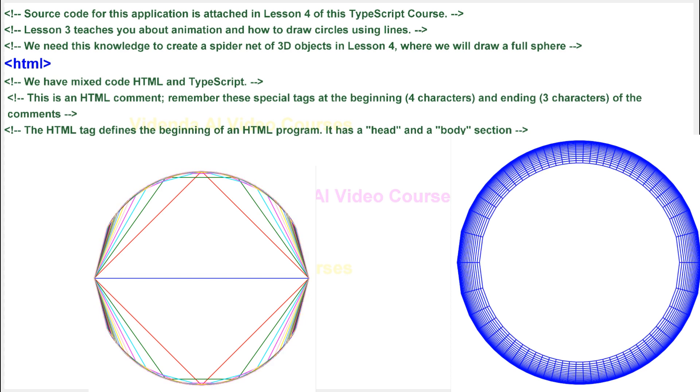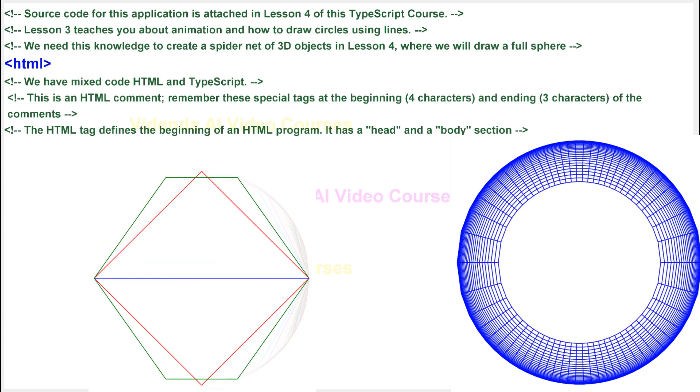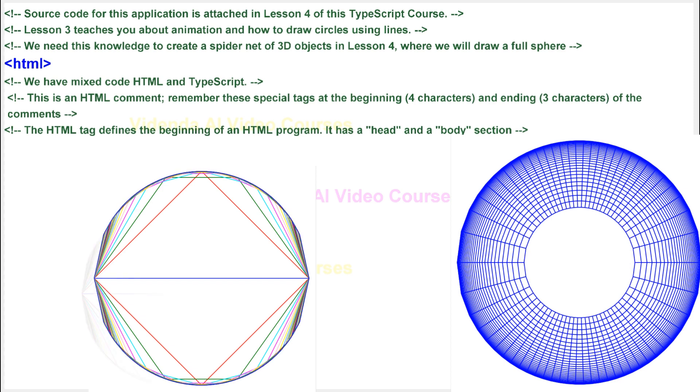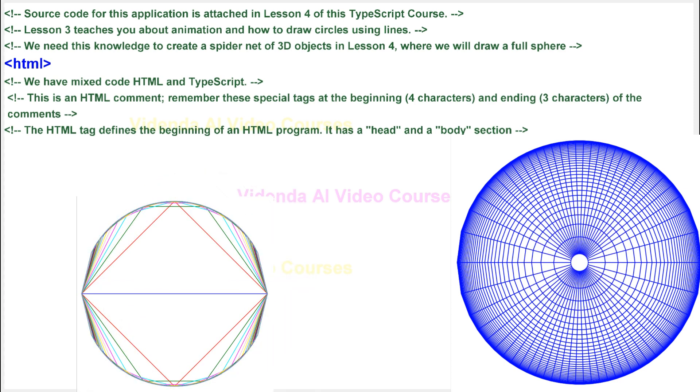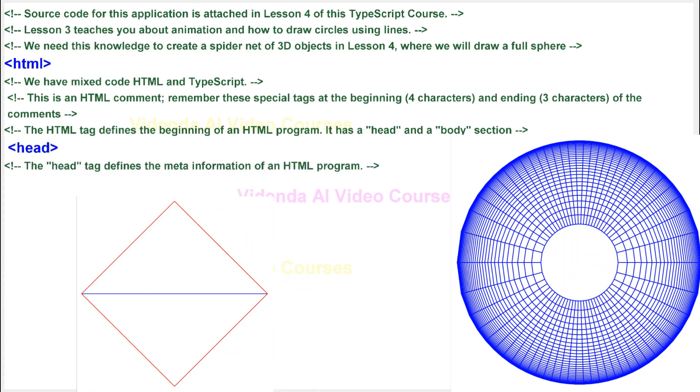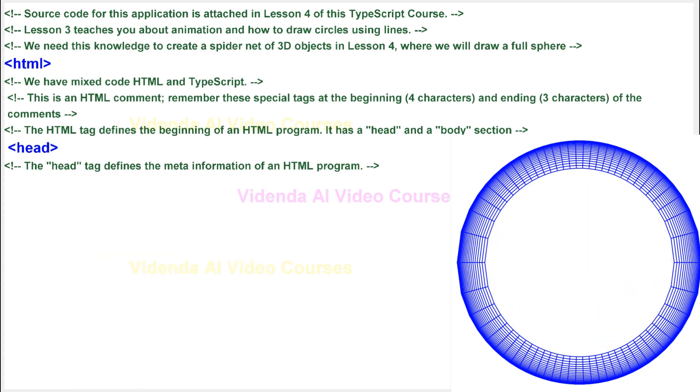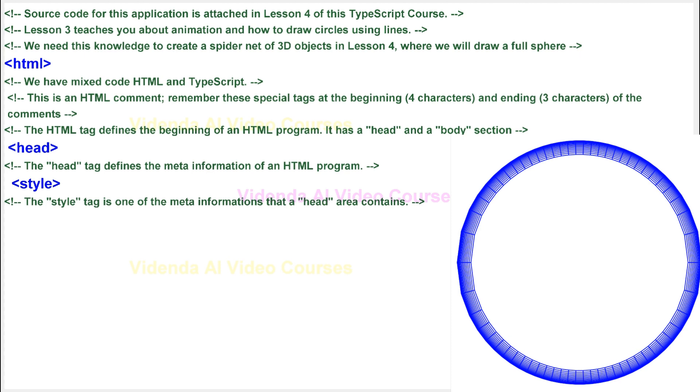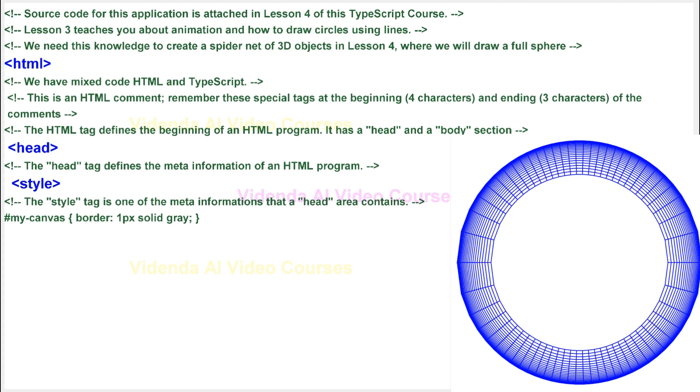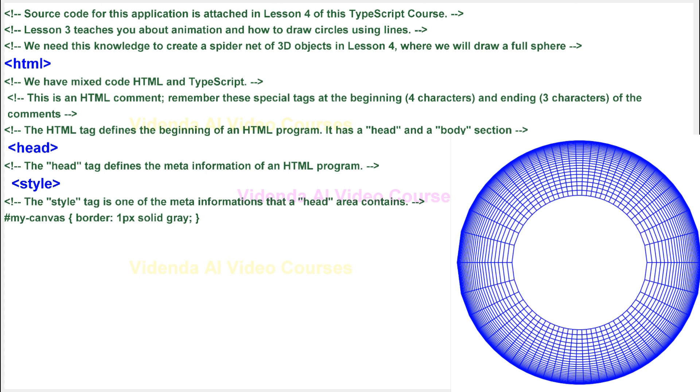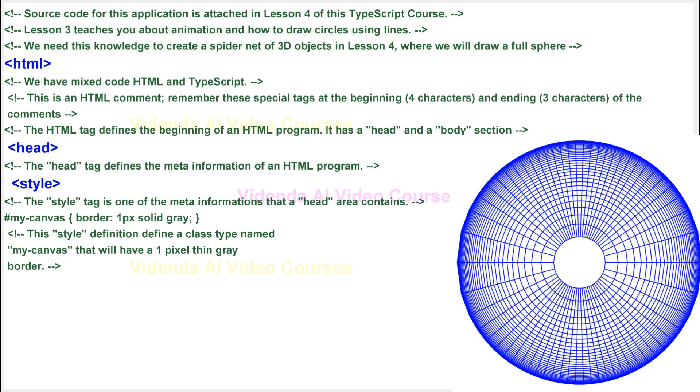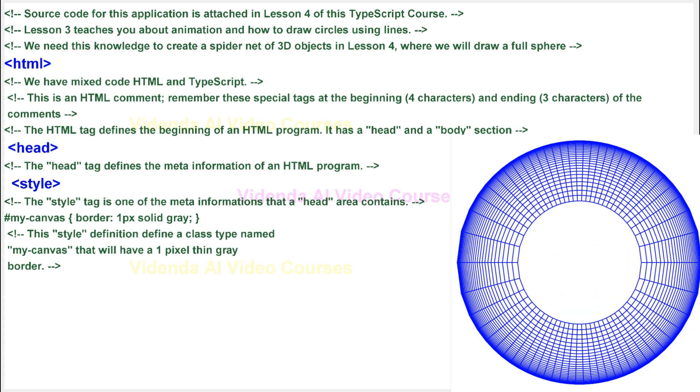The HTML tag defines the beginning of an HTML program. It has a head and a body section. The head tag defines the meta-information of an HTML program. The style tag is one of the meta-informations that a head area contains. MyCanvas, Border, 1px solid gray. This style definition defines a class type named MyCanvas that will have a 1-pixel-thin gray border.